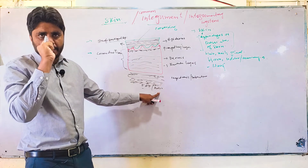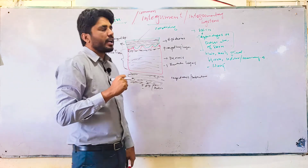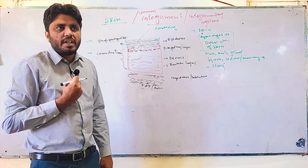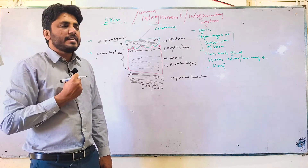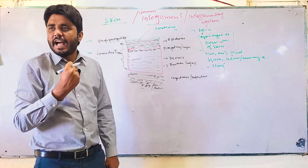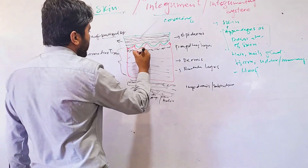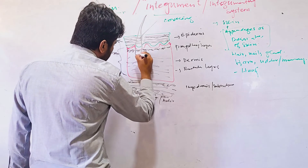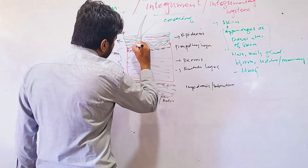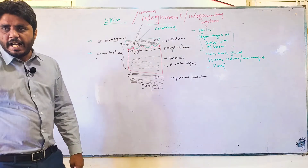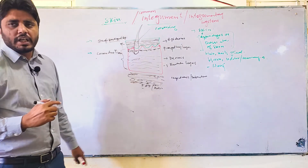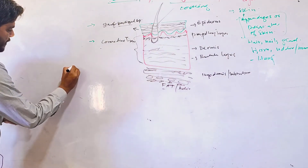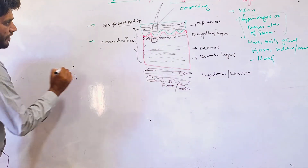Especially in mammals, the characteristic feature of skin is that it has different colors, and in most cases skin has hair. You will find a hair follicle from which hair originates from the skin. Skin also has two kinds of glands. These appendages and derivatives are modifications of the epidermis.